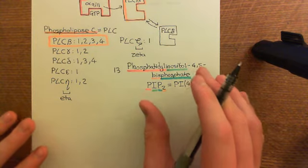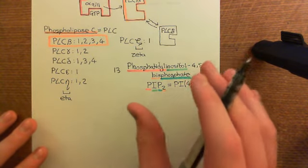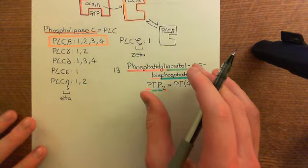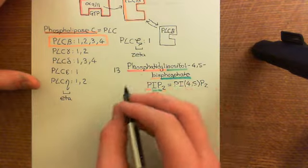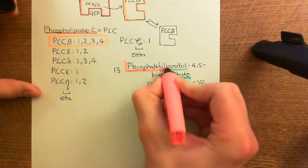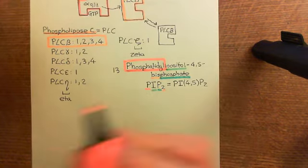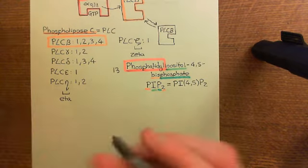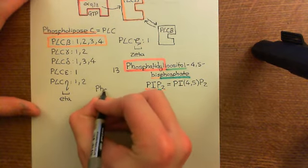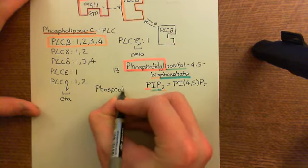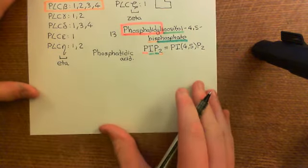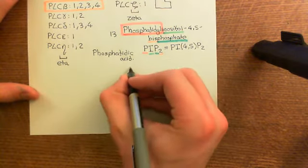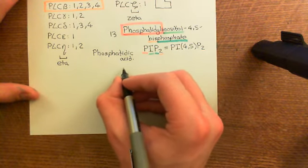Let me describe the structure of this molecule. PIP2 is a phospholipid and therefore a component of the cell membrane. To understand its structure, we start with the term 'phosphatidyl', which means the structure contains the molecule phosphatidic acid. We'll start with the structure of phosphatidic acid and then see how to turn it into phosphatidyl inositol.